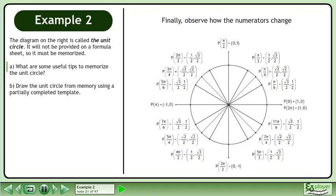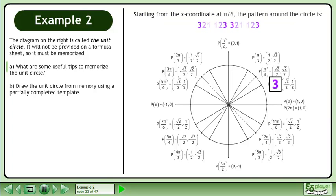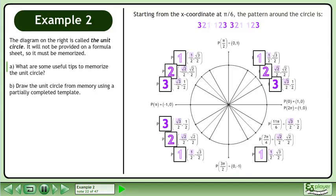Finally, observe how the numerators change. Starting from the x-coordinate at π/6, the pattern around the circle is 3, 2, 1, 1, 2, 3, 3, 2, 1, 1, 2, 3.